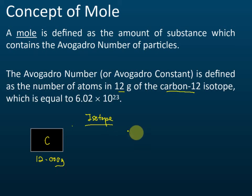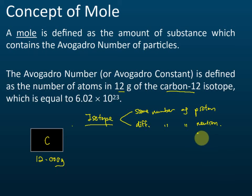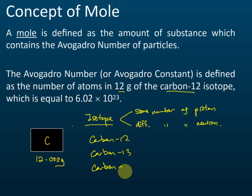If you still remember, isotopes are nuclides that have the same number of protons but a different number of neutrons in the nucleus. That's what an isotope is. Carbon has three isotopes: carbon-12, carbon-13, and carbon-14.